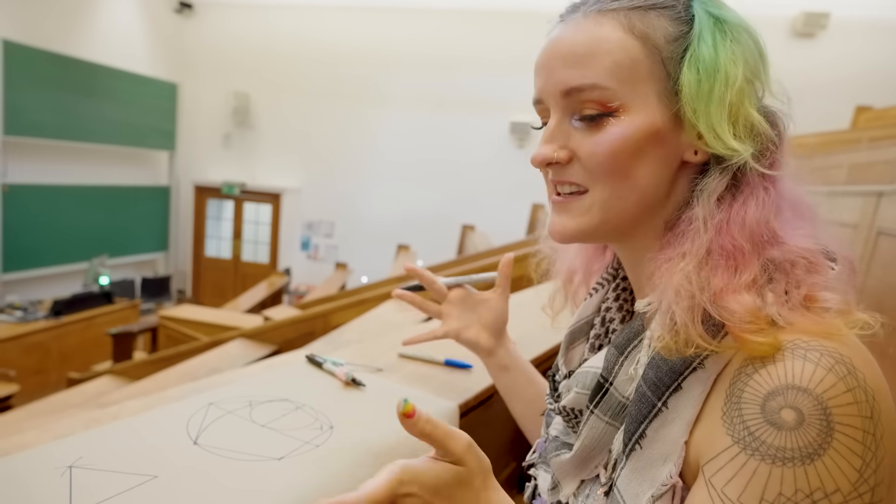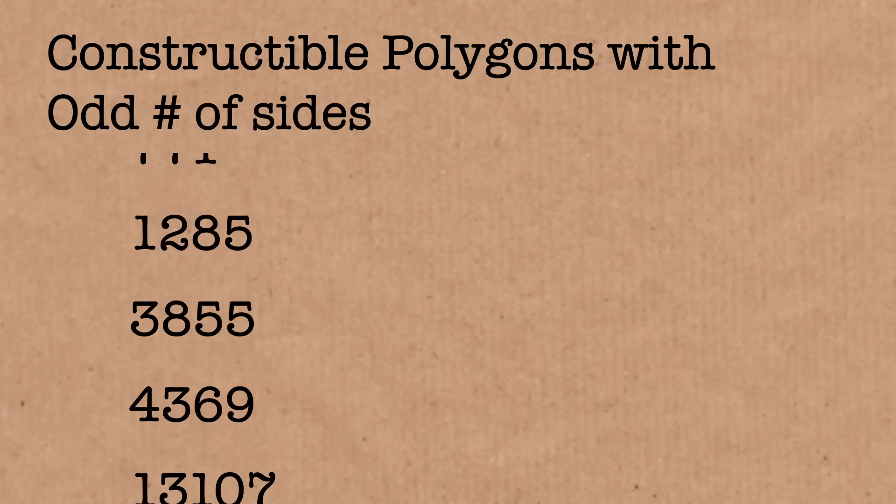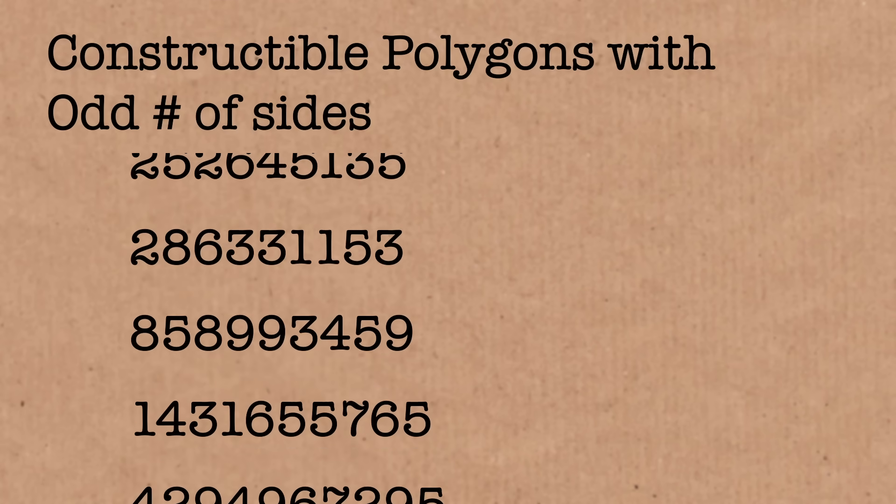No. The next odd sided polygon that you can construct with these simple and beautiful tools is 15. Then after that would be 17, 51, 85 and so on. You might think we have strayed far from the Sierpinski triangle path here. I know. I know. We're going to need another piece of paper.